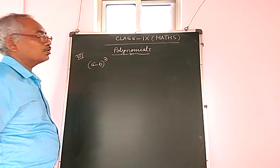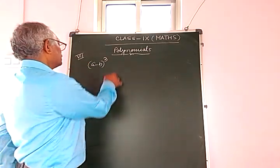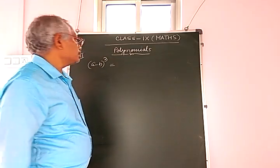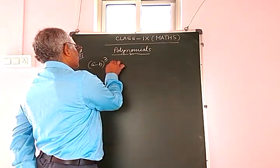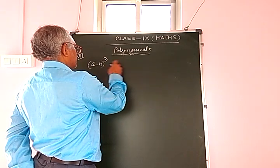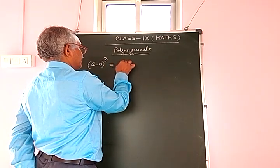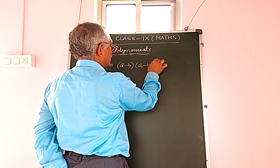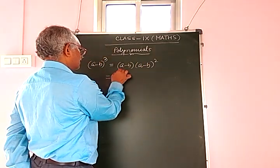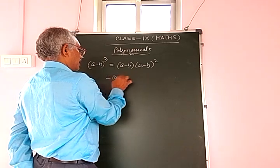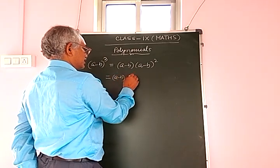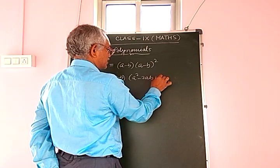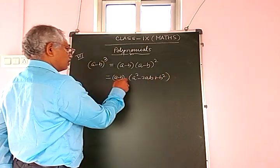(A - B)³ can be written as (A - B) × (A - B)², and (A - B)² is equal to A² - 2AB + B².